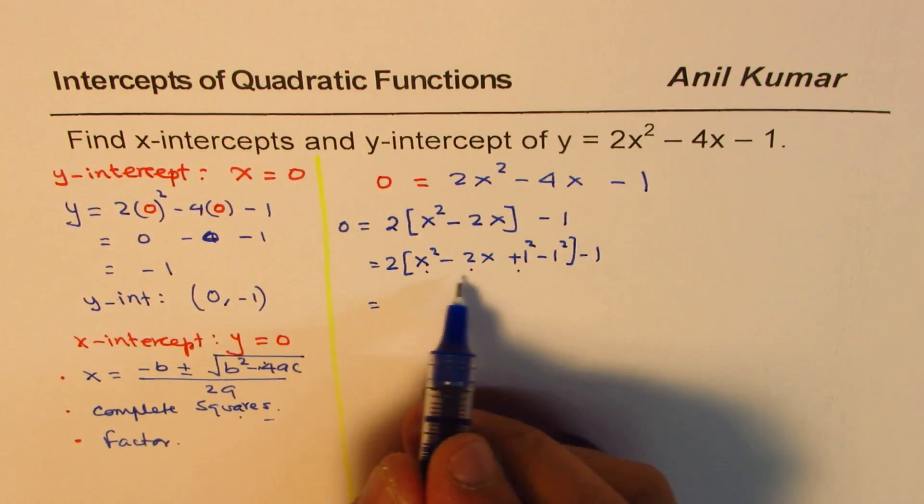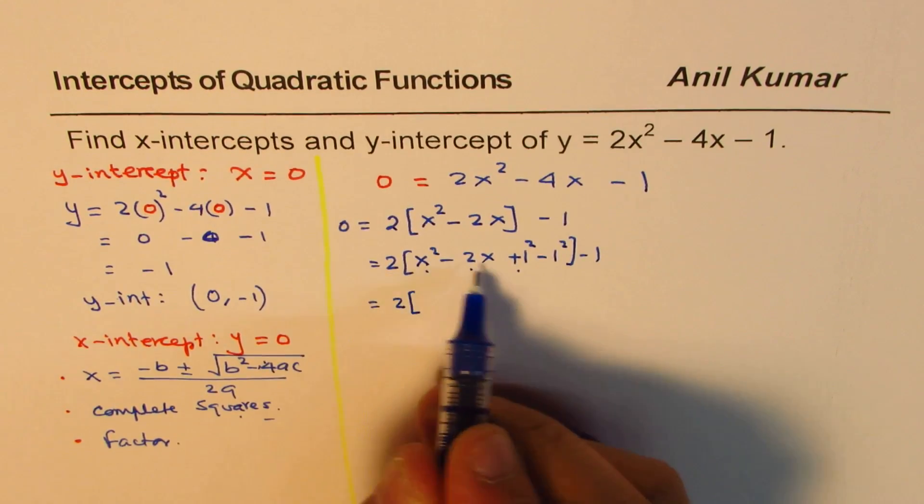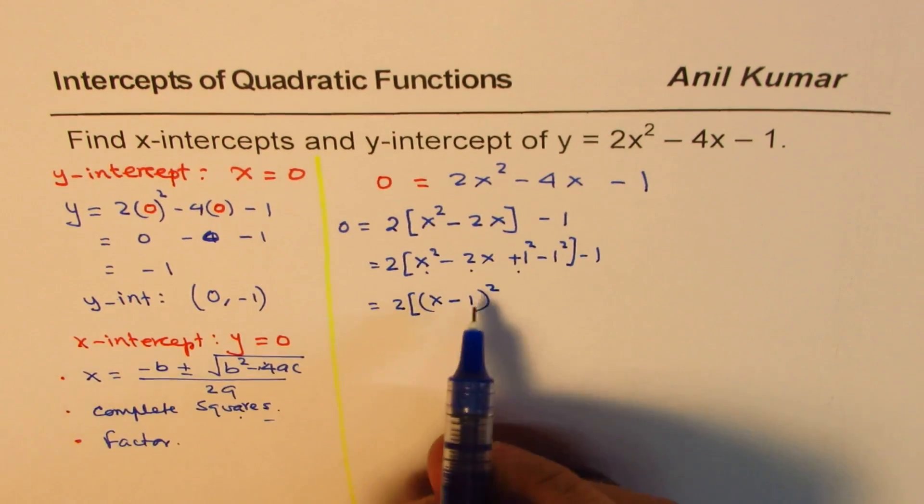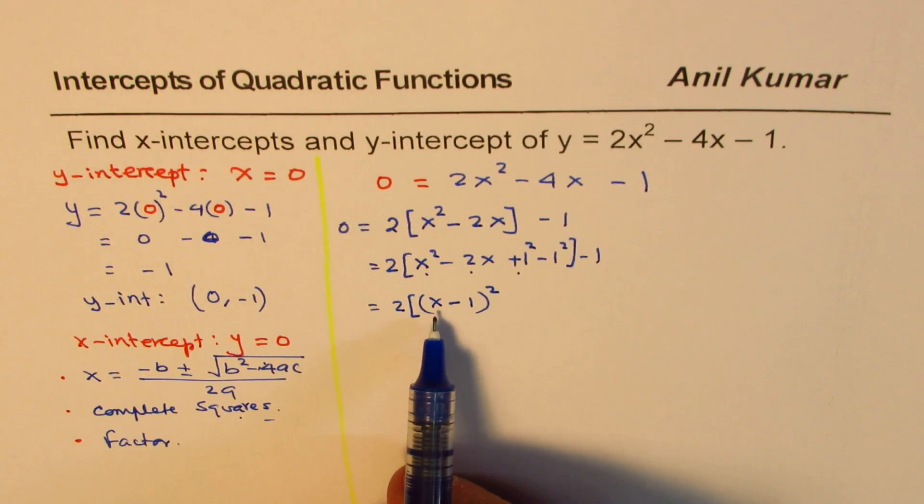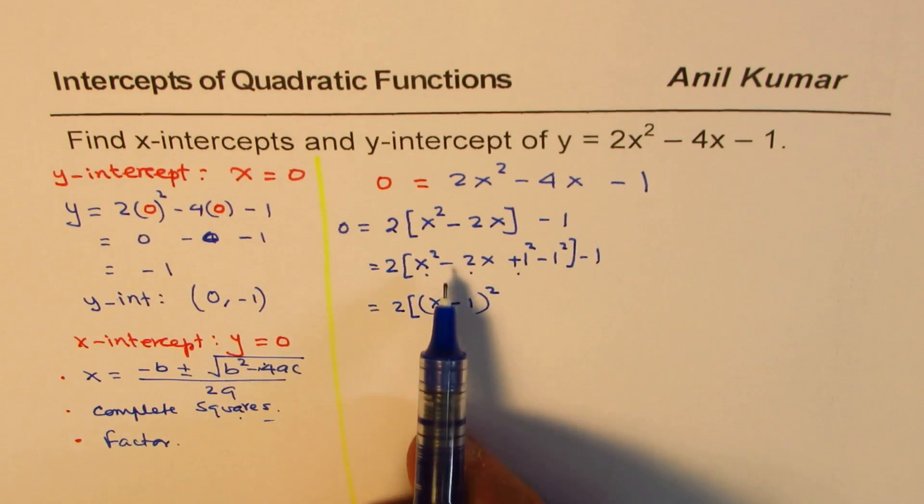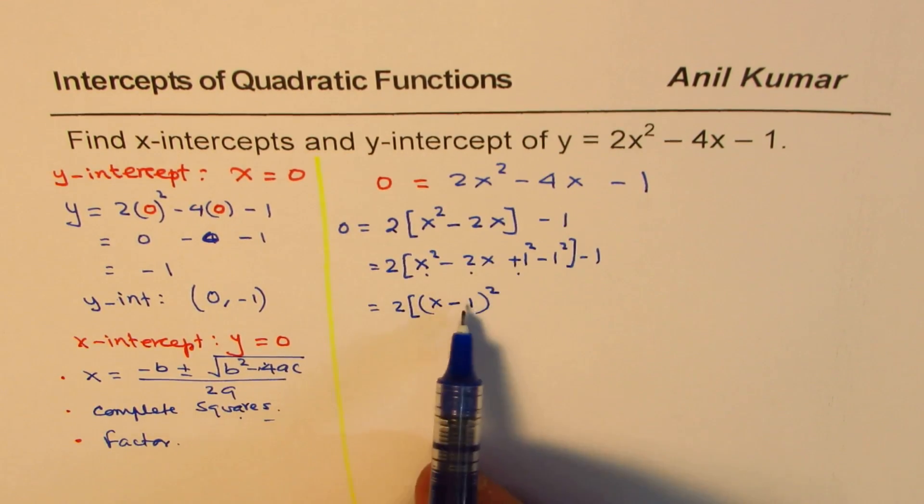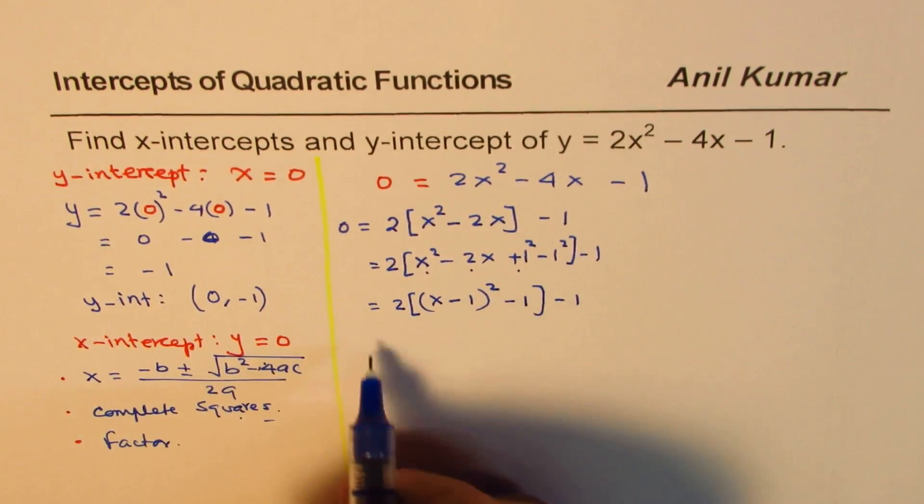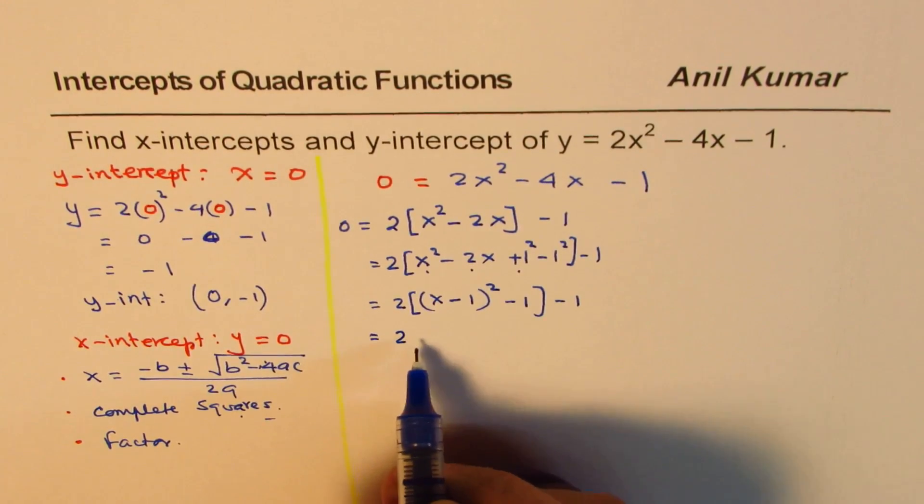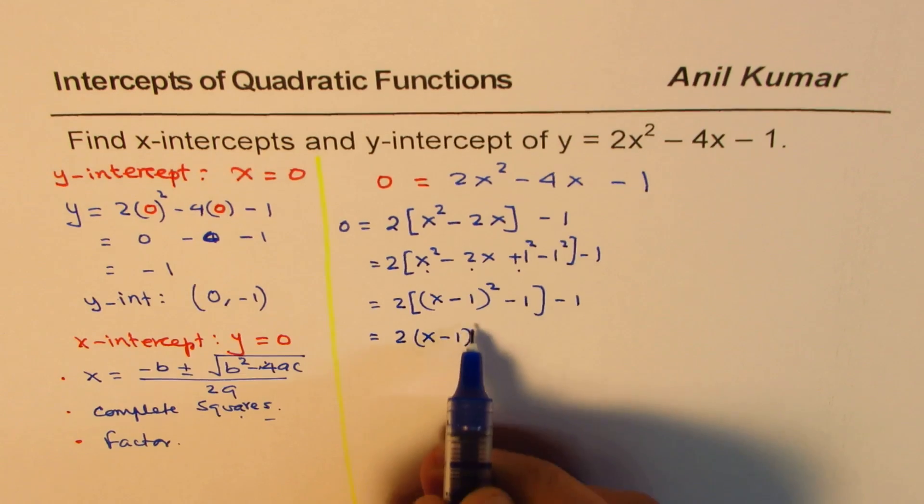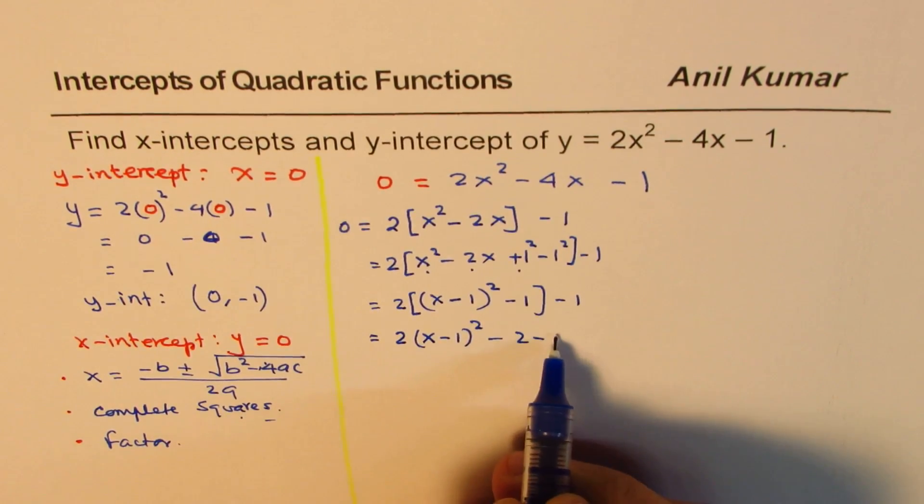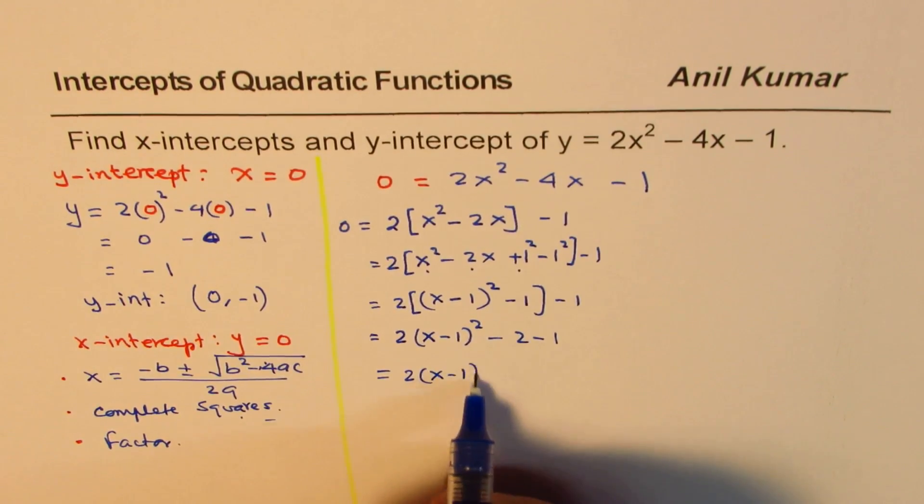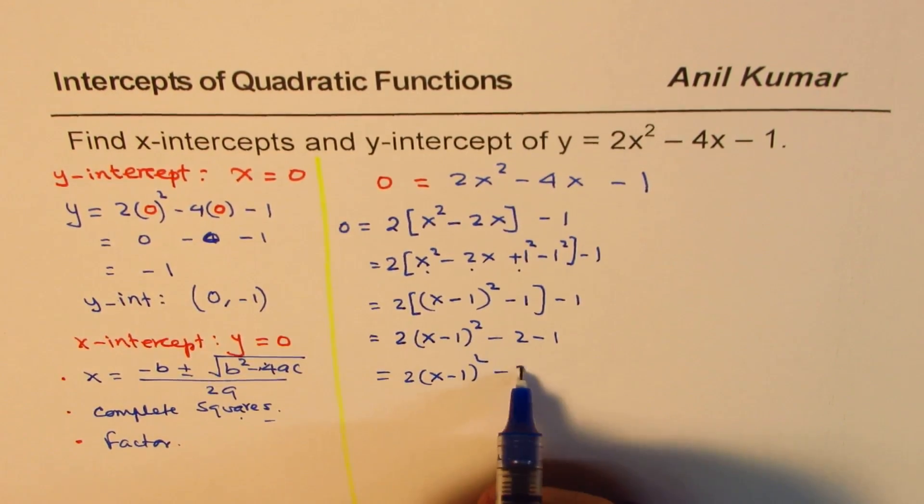Now, these three terms form a perfect square. So we could write this as x minus 1 whole square. If you expand this, you get x squared minus 2x plus 1. Take the sign from here, number from there. And this is minus 1. 1 squared is 1 minus 1. So what we get here is 2 times x minus 1 whole square minus 2 minus 1 or 2 times x minus 1 whole square minus 3.